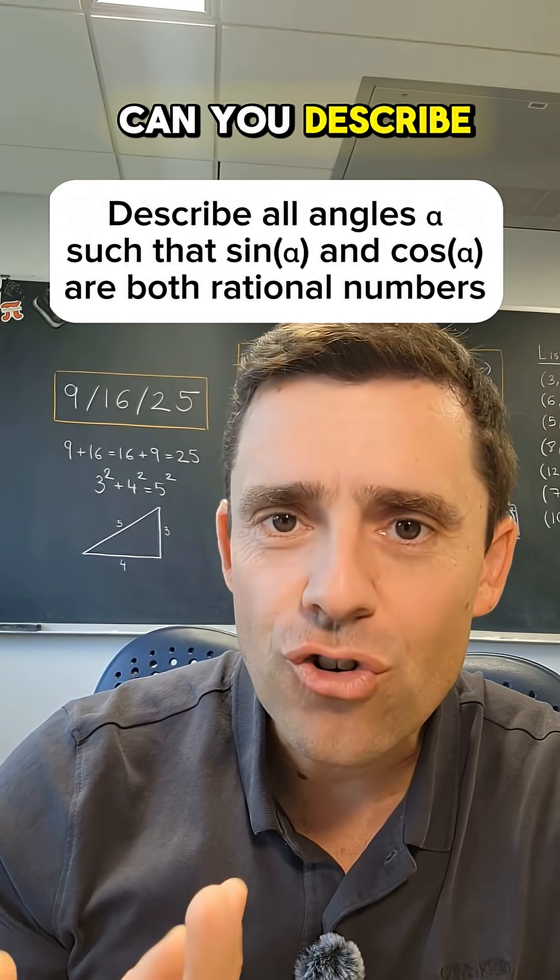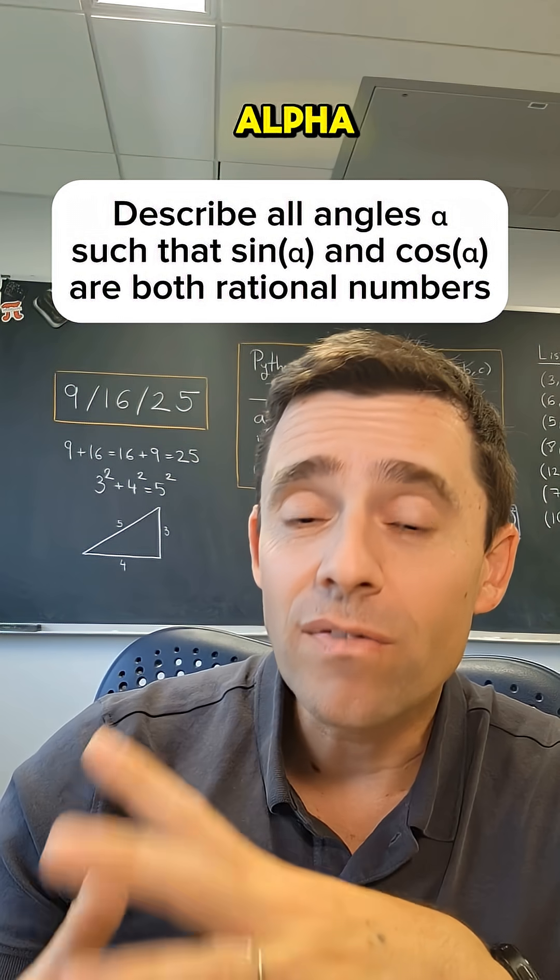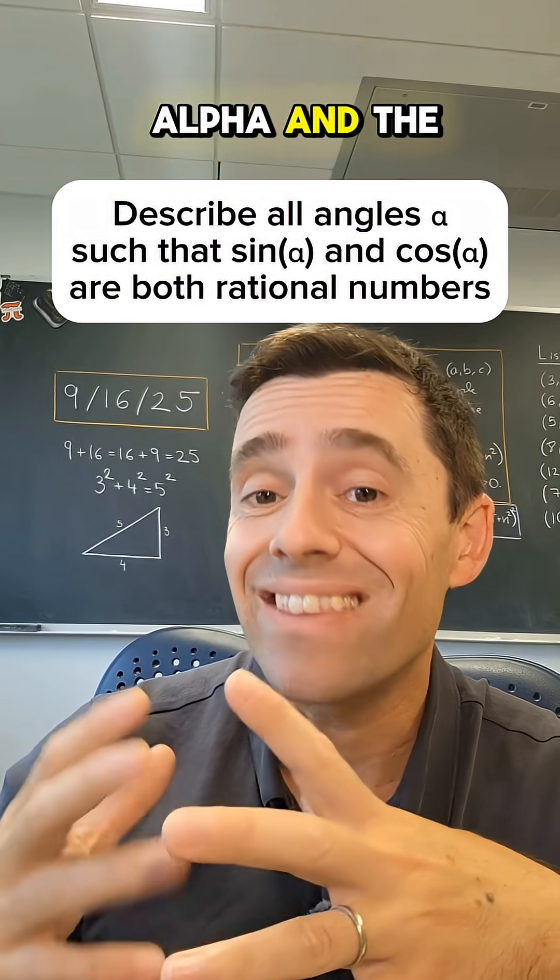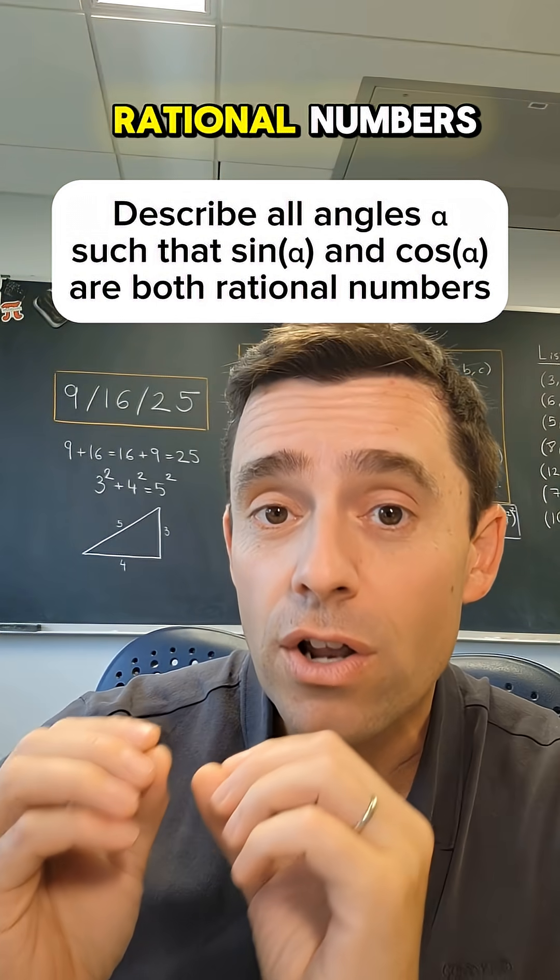Here's a question for you. Can you describe all the angles alpha such that the sine of alpha, the cosine of alpha, and the tangent of alpha—so all the trigonometric values—are rational numbers?